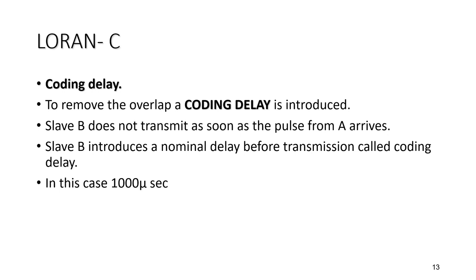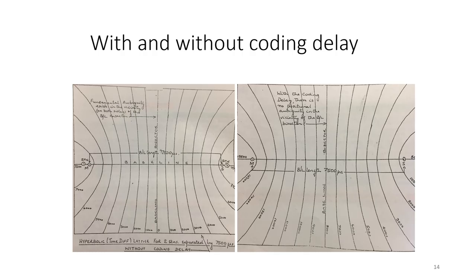The coding delay ensures that the master signal always arrives first at the receiver anywhere within the coverage area. As shown on screen, the left side shows transmission without the coding delay, and the right side shows transmission with the coding delay — in this case approximately 500 microseconds. With the coding delay there is no positional ambiguity in the vicinity of the baseline bisection, whereas without the coding delay a fundamental ambiguity exists on both sides of the baseline bisection. The coding delay makes the line of position much clearer and more accurate.